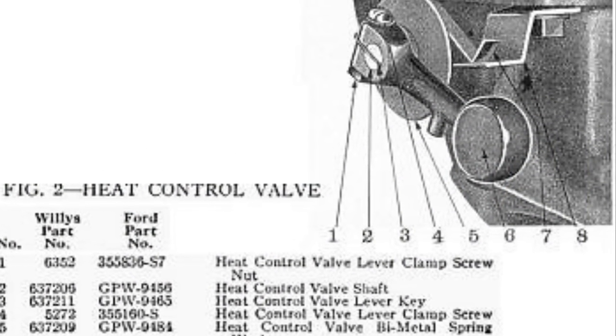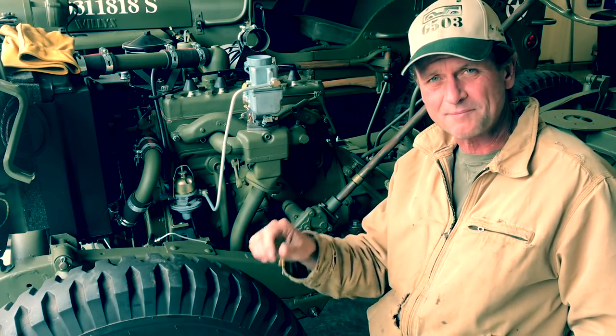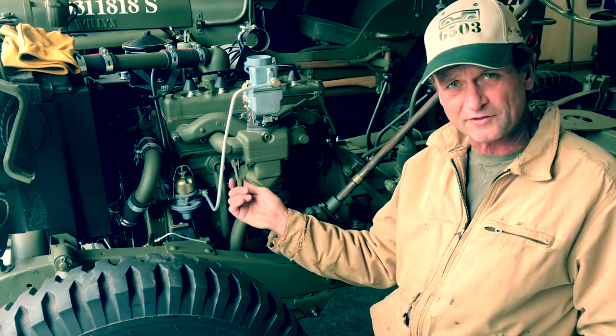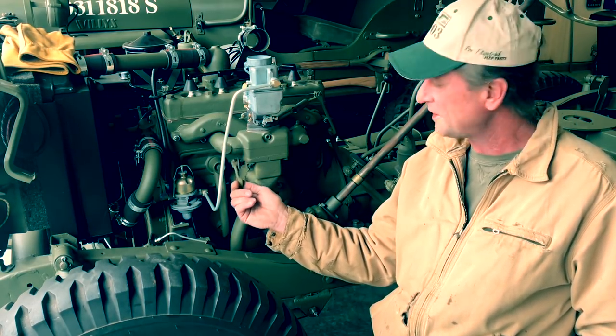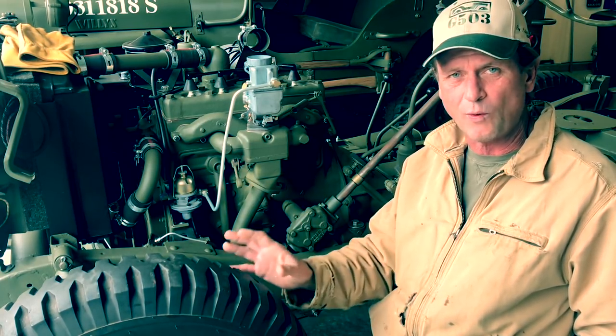Let's take a Team G503 look at the heat control valve assembly for the Willis MB L134 engine. We've got our intake and exhaust manifold, and we've got this little doohickey down here that some call a lollipop—it's really a counterweight and it's part of the heat riser assembly. I put together a little video a while back showing exactly how this works and explaining its function. Check it out.